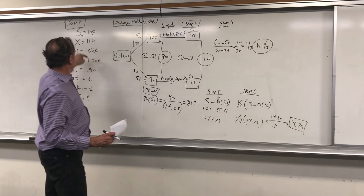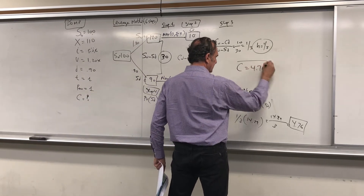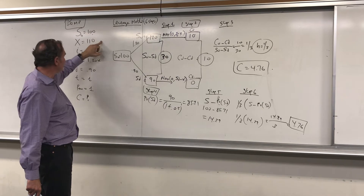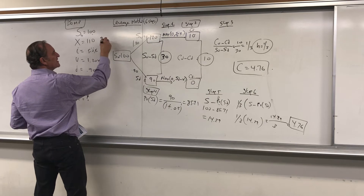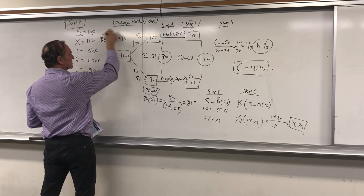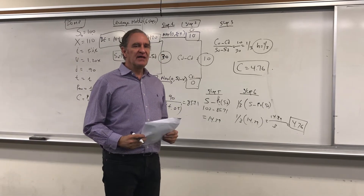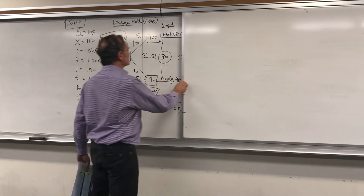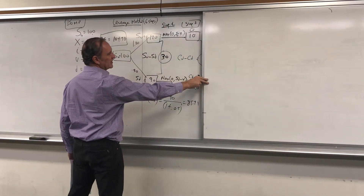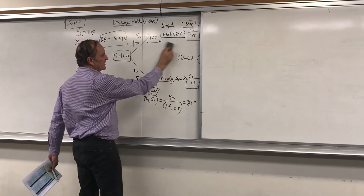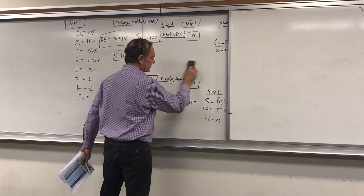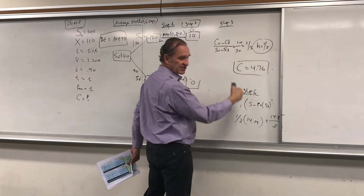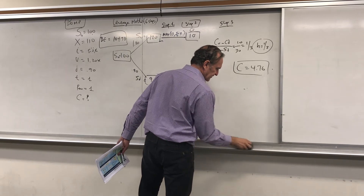So the call option premium from the leverage method is $4.76. This makes sense because the option is well out of the money — the stock must rise above $110, so the break-even is $110 + $4.76 = $114.76. Now I'll cover the leverage method work and move on to Method 2, the probability method, and we should get the same answer of $4.76.